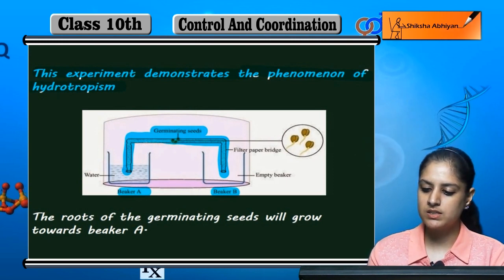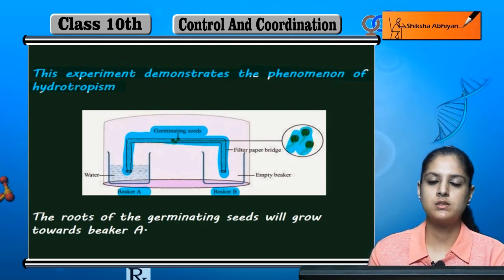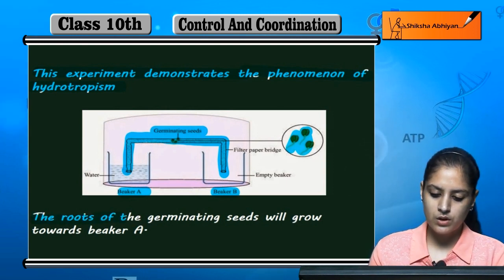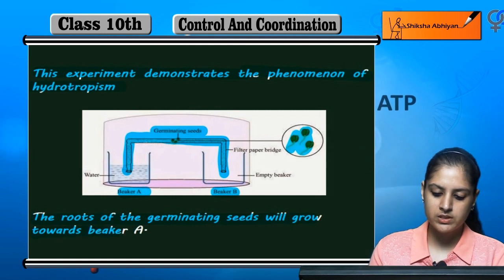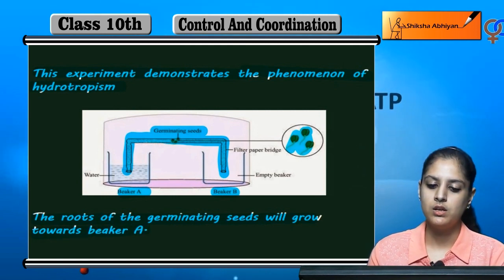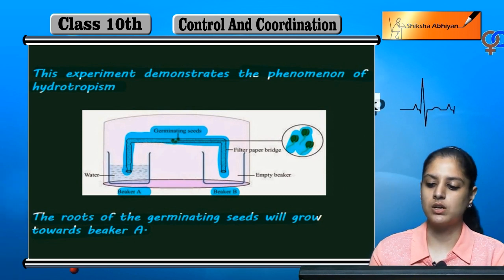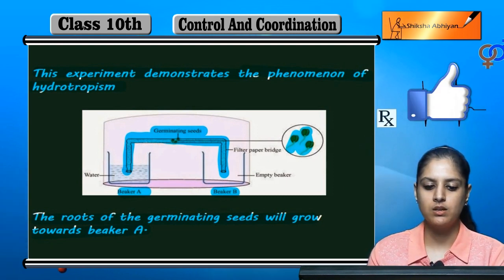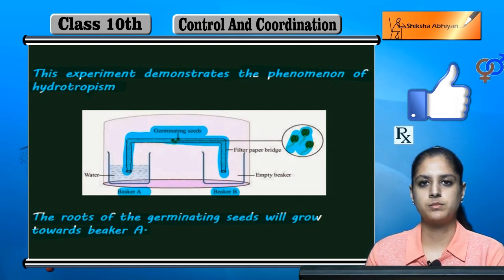You can see the germinating seeds are sprouting. The roots of the germinating seeds will grow towards beaker A, because beaker A contains water. The roots grow towards the beaker containing water. This demonstrates the phenomenon of hydrotropism.